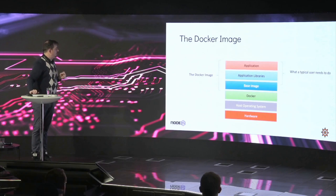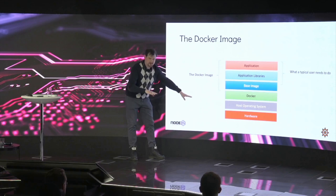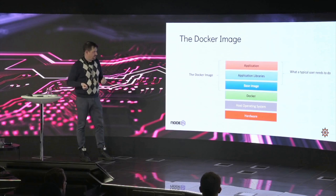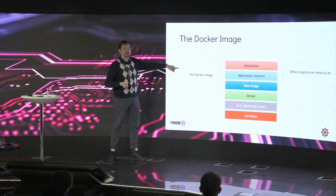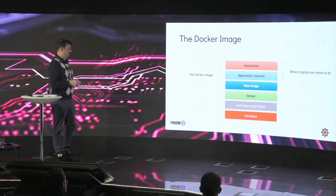Looking from the bottom: you have your computer — your desktop or laptop — then your operating system, then Docker installed. Then you have the Dockerization of your application. You have something called the base image, then the application and the application libraries. Application libraries are nothing more than your package.json file — the things needed for your application to run.